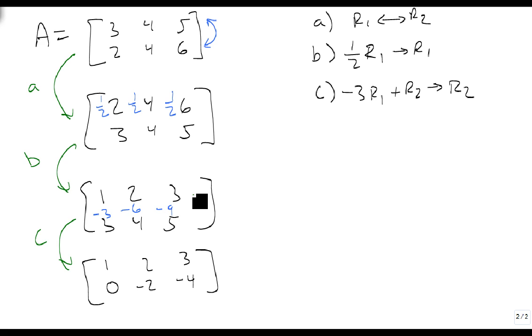Minus 3 times row 1 plus row 2 gets stored in row 2. So that's how we use each of the three operators.